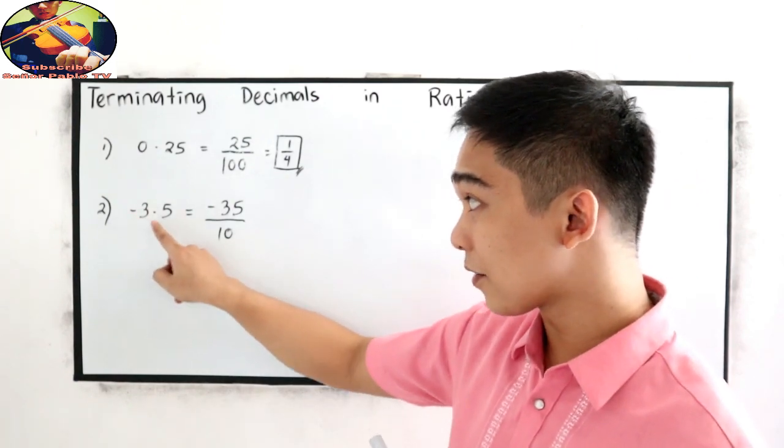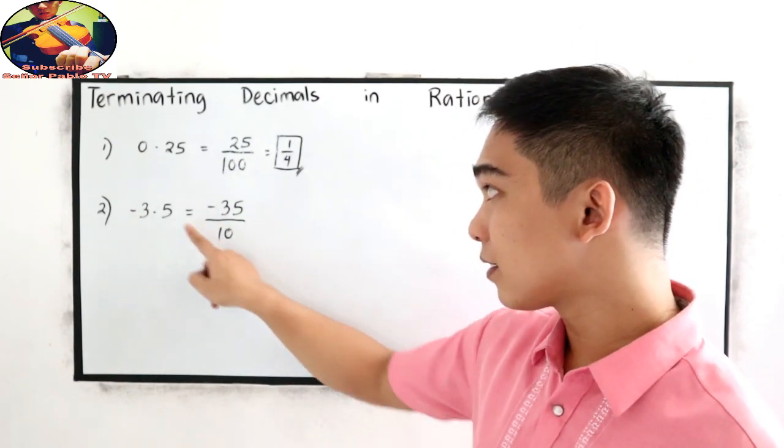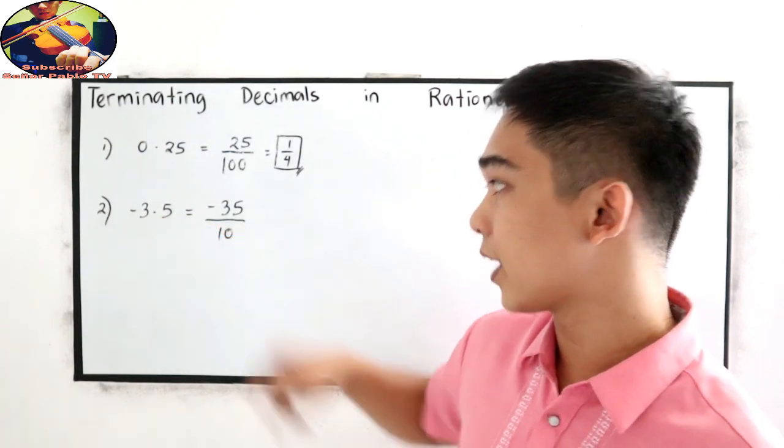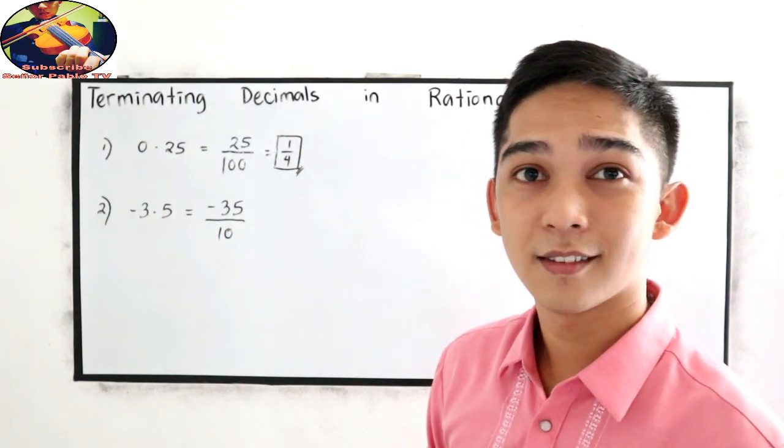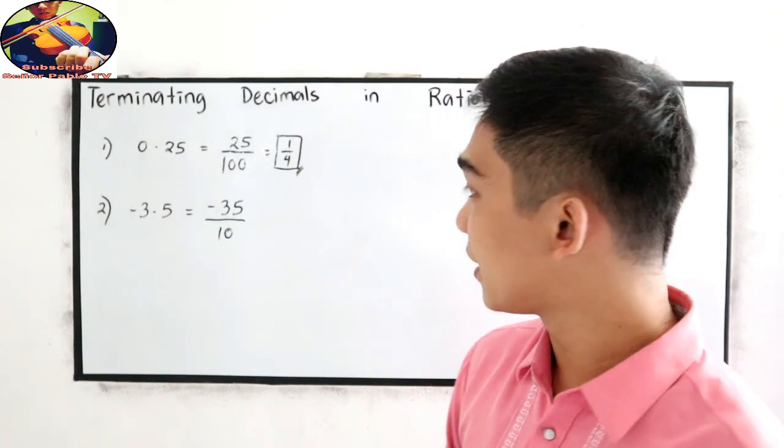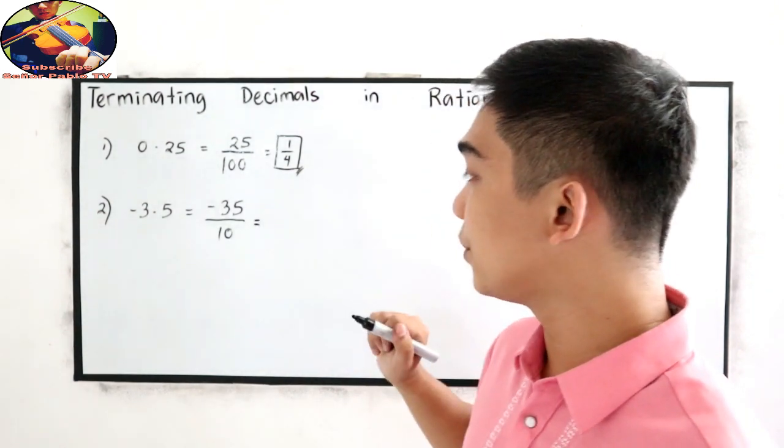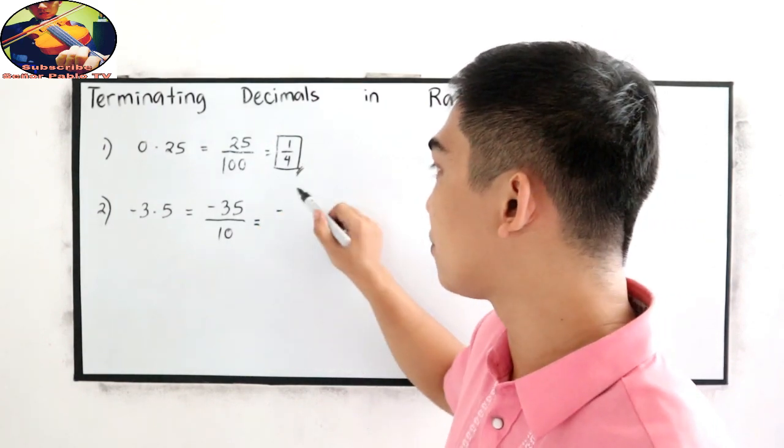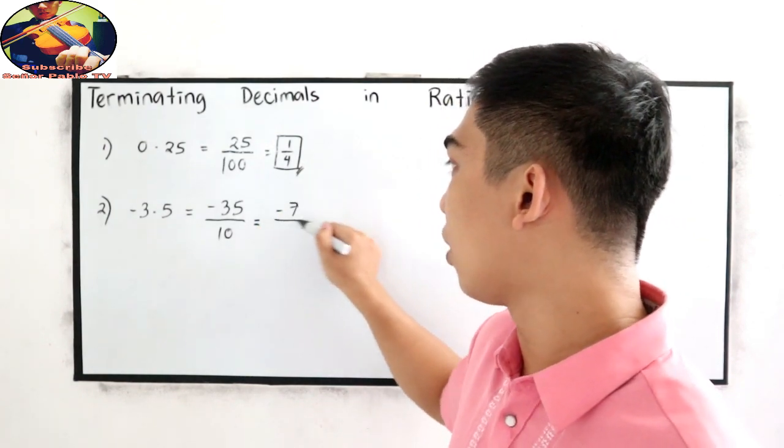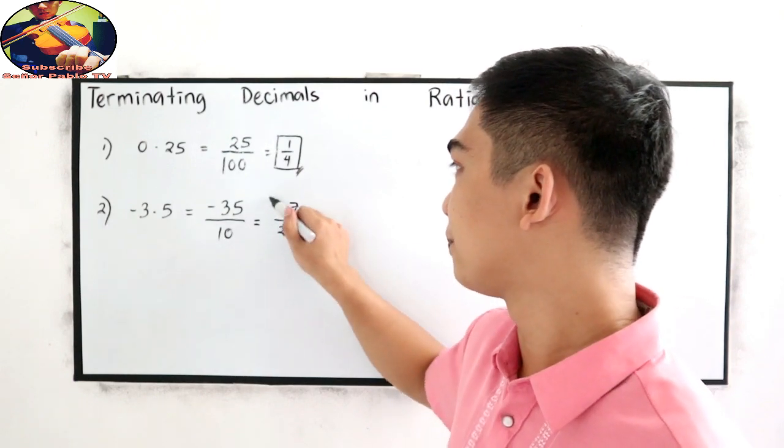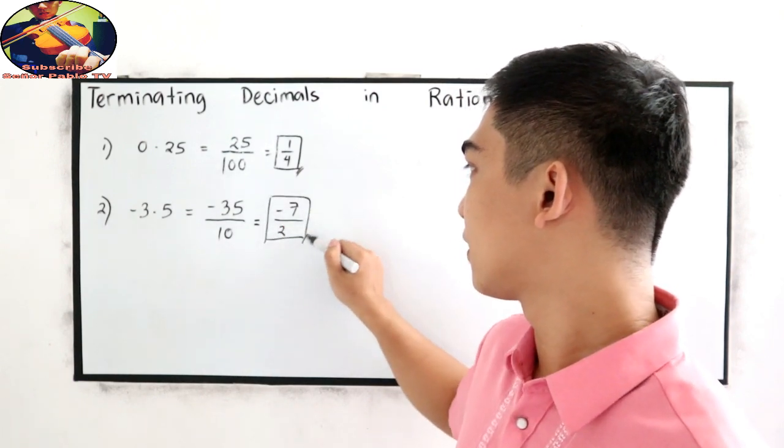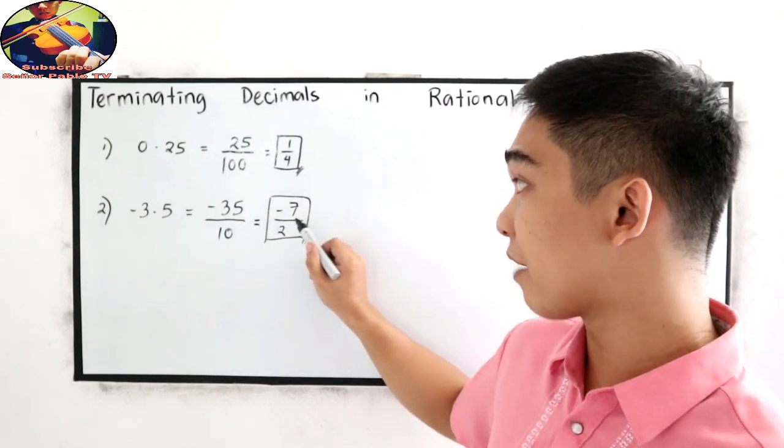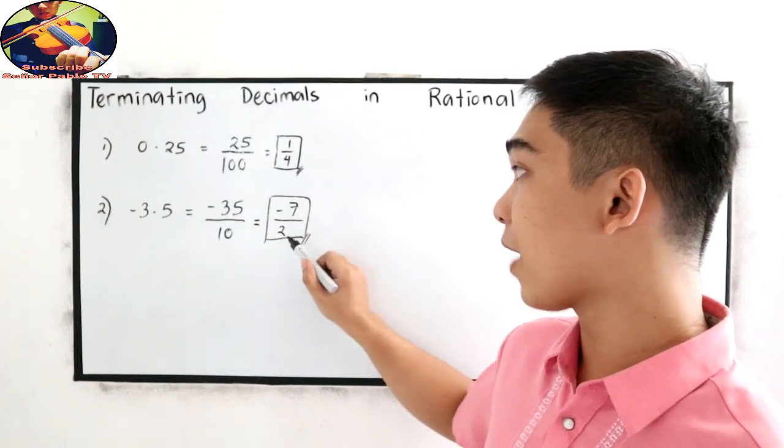Again, negative 3.5 over 1 decimal place. So write into 0, then write 1. Now simplify. This is equal to divisible by 5. So negative 7 over 2. Negative 35 divided by 5, that is negative 7. 10 divided by 5, that is 2.